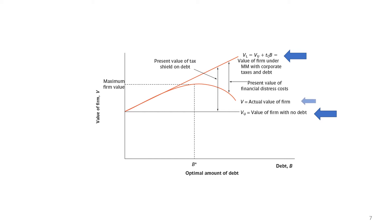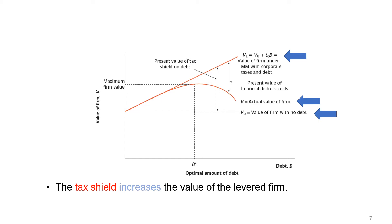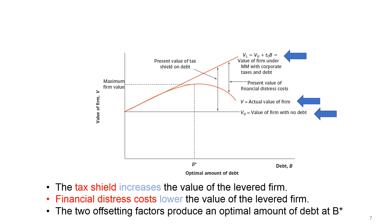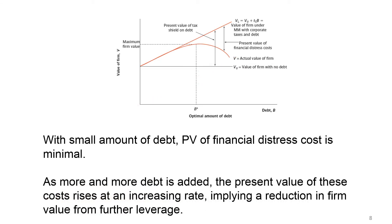The actual value of the firm with financial distress costs is shown by a separate line. The distance between VL and this actual value line is the present value of financial distress costs. We can see that the tax shield increases the value of the levered firm, while financial distress costs lower it. As a result, these two offsetting factors produce an optimal amount of debt at point B*. With small amounts of debt, the present value of financial distress costs is minimal, but as more debt is added, these costs rise at an increasing rate, implying a reduction in firm value from further leverage.